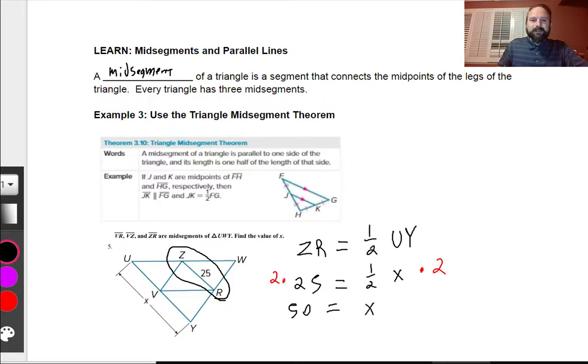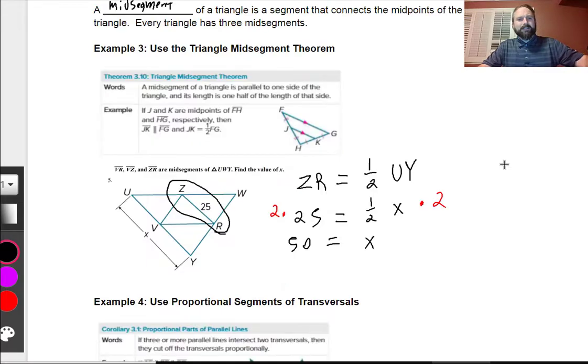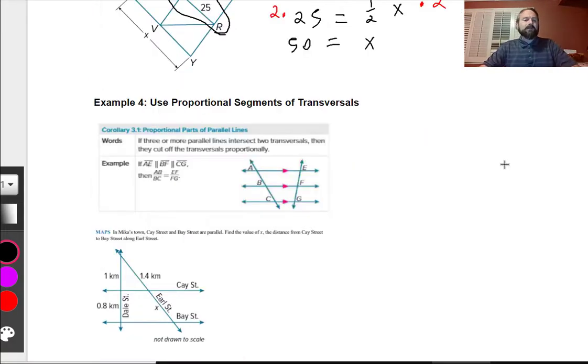So this was the triangle mid-segment theorem. We're on page 2 of 3. Let's go on to the next part. So example 4. Use proportional segments of transversals. If three or more parallel lines intersect two transversals, then they cut the transversals proportionally. So this is saying, hey, look, this top one over the bottom one is going to be equal to the top one over the bottom one.